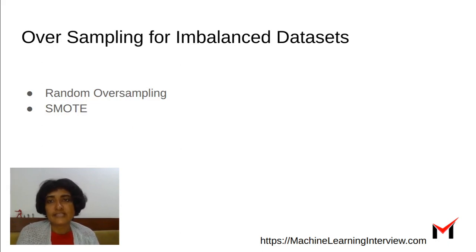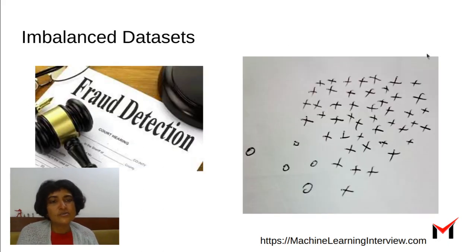Some of the popular techniques to work with imbalanced datasets are either undersampling, which is removing some points from the bigger class so that the number of points equals that of the smaller class. But when we have very few points in the smaller class, it might not be such a great idea because we'll end up with a really small dataset.